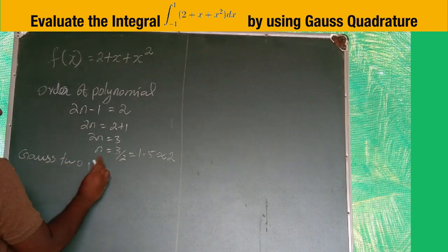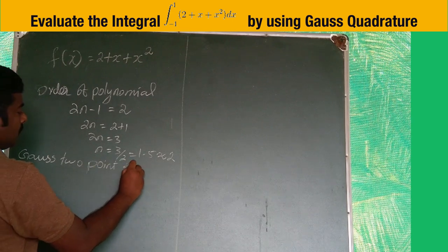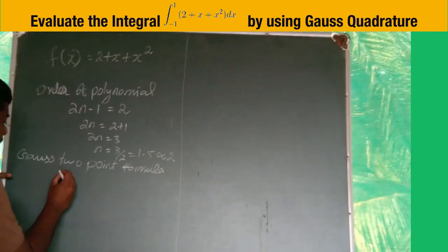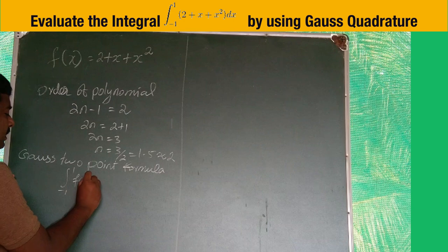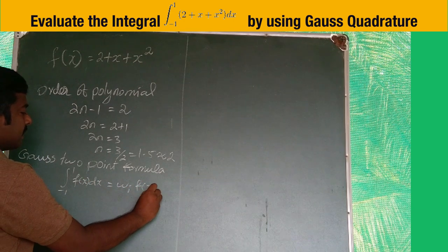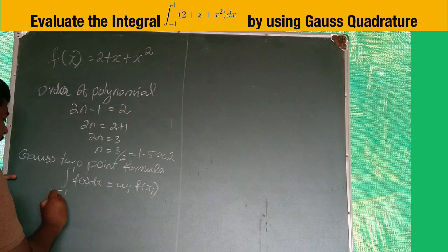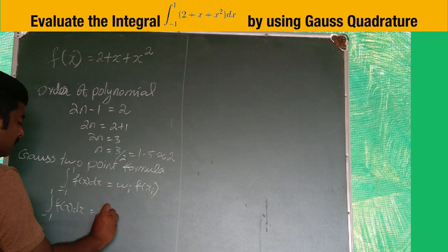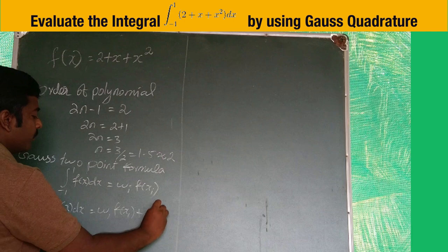Gauss 2-point formula: the general formula is integral from -1 to 1 of f(x)dx equals the sum of wi·f(xi). For 2-point formula, this expands to f(x)dx = w1·f(x1) + w2·f(x2).